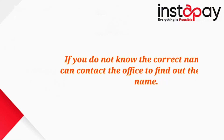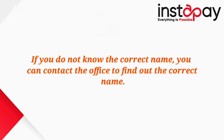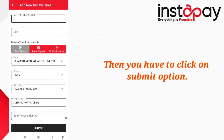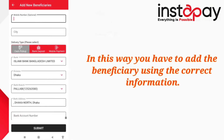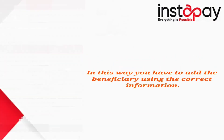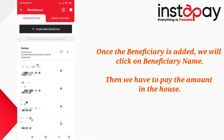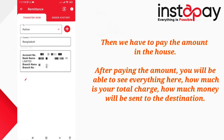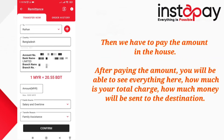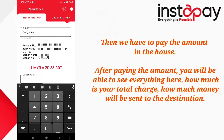If you do not know the correct name, you can contact the office to find out. Then you have to click on the 'Submit' option. In this way, you have to add the beneficiary using the correct information. Once the beneficiary is added, click on the beneficiary name, then enter the amount. After entering the amount, you will be able to see everything — how much is your total charge and how much money will be sent to the destination.